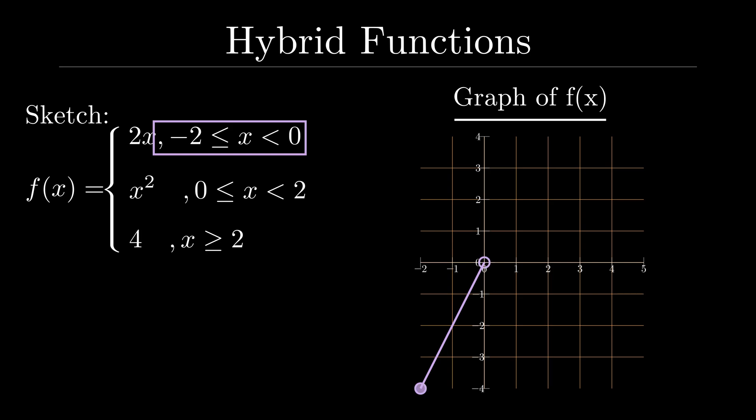We use open circles to indicate that it's not inclusive of the x point, and we use closed circles to indicate that it is inclusive of those x points.